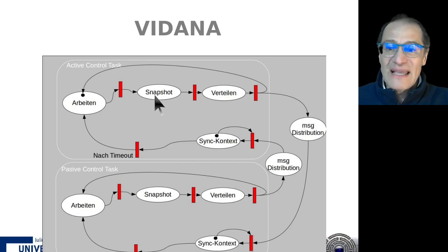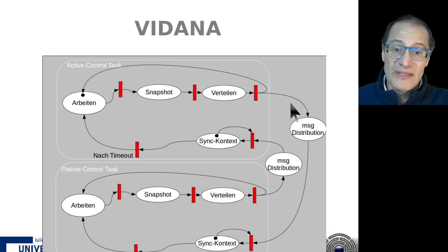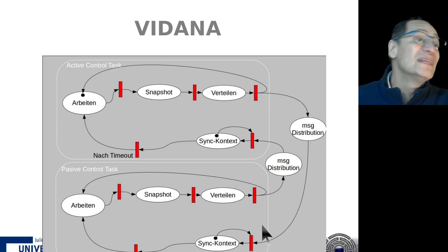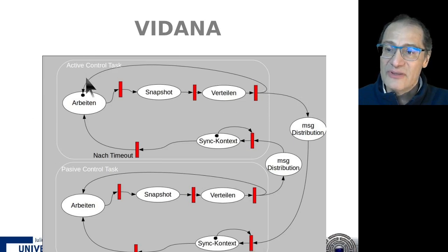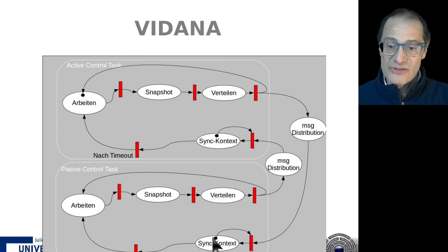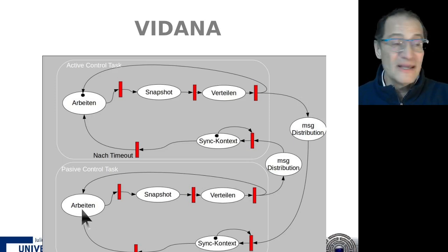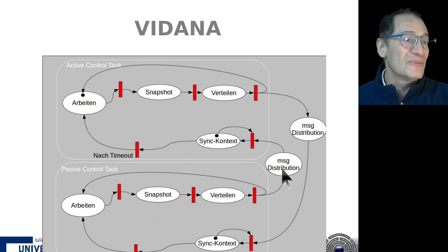In each time cycle, the active distributor takes a snapshot of its internal structure - which tasks are running where - and distributes it to the network. On the passive task distributors, they receive this and synchronize their context, staying in this loop. The active one distributes and comes back, distributes and comes back. Only when there is a timeout - no data received from the active node anymore - does the passive distributor cross the transition, begin working, take a snapshot, and distribute, effectively becoming the new master.